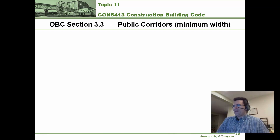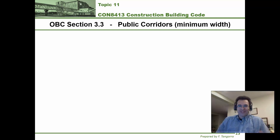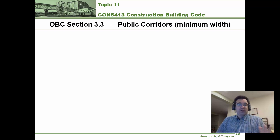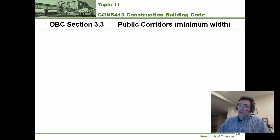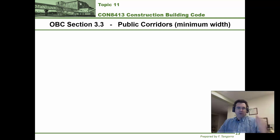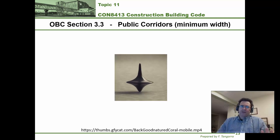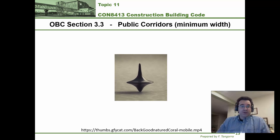Hello and welcome back. We're in part 2 of topic 11 and we're going to get started with what section 3.3 describes about the minimum width of public corridors for access to exits. I want to use a scene from a movie you may or may not be familiar with to illustrate this point.